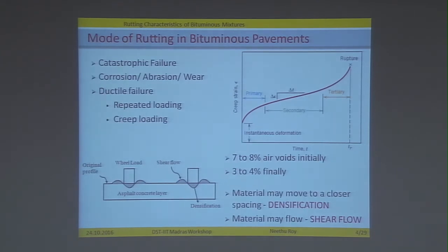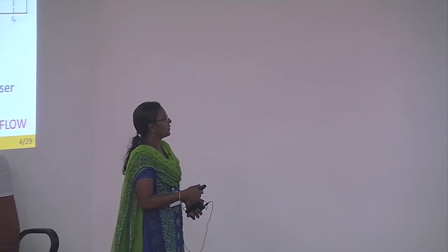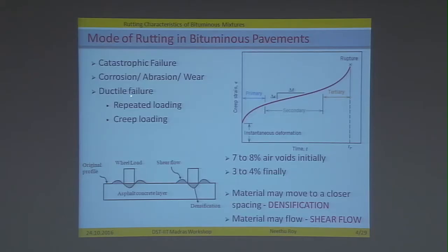Why rutting is significant or peculiar is because it is not a catastrophic failure, nor something like abrasion or wear, but it is a ductile failure — a failure that happens over a period of time as the pavement service life increases due to repeated loading as well as creep loading.